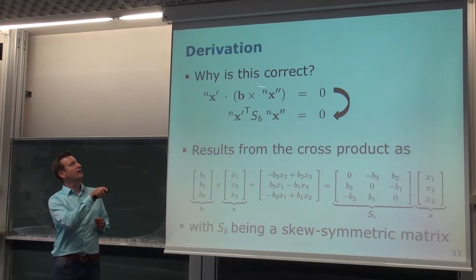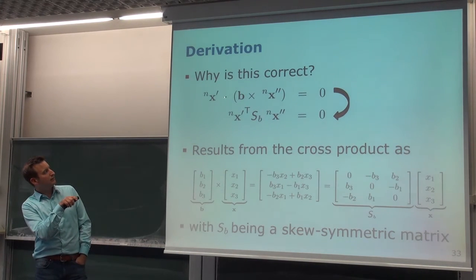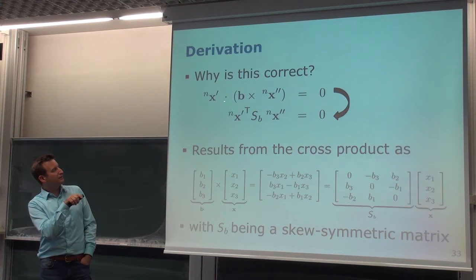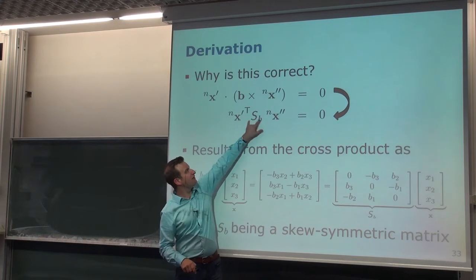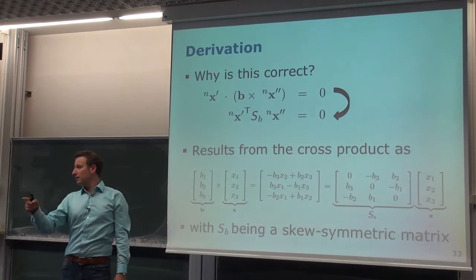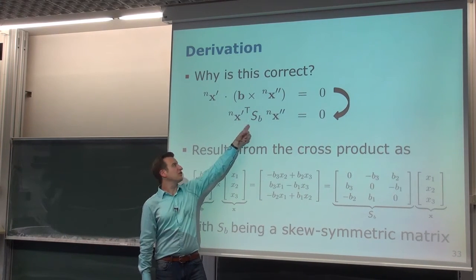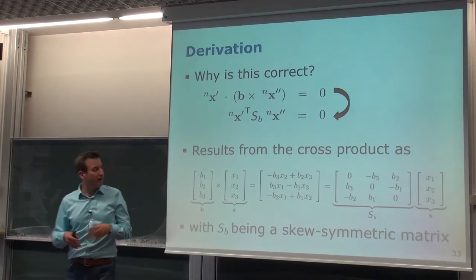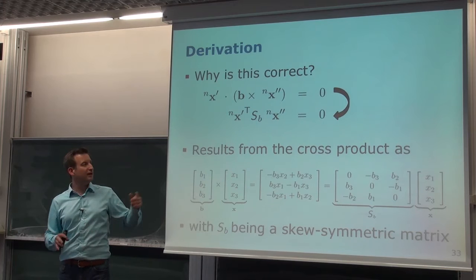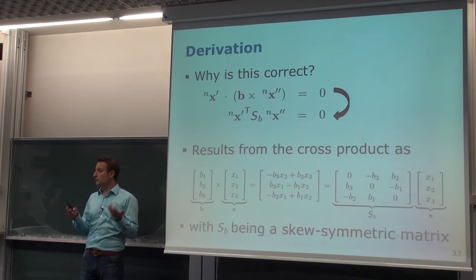We do this transformation to express the combination of dot product and cross product through a matrix. The dot product of a and b can be written as a-transpose times b, which gives the same result. The advantage is we have a matrix multiplied by two vectors in a simple form. We will see very soon how we can exploit that, and this constraint has a very nice property for computing what is called the fundamental matrix.